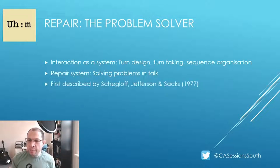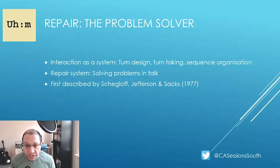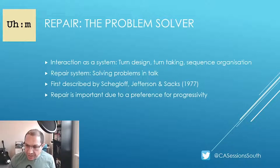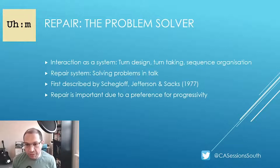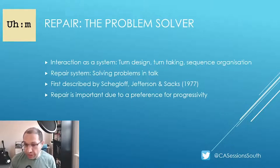The concept of repair was first described by Schegloff, Jefferson, and Sachs in 1977, where they noted that there was an overwhelming preference for self-correction. In social interaction, there exists a preference for interactions to move forward with minimum disruption. This is what Schegloff described as a preference for progressivity, and this is important because repair initiations inevitably disrupt the progressivity of an interaction in progress.